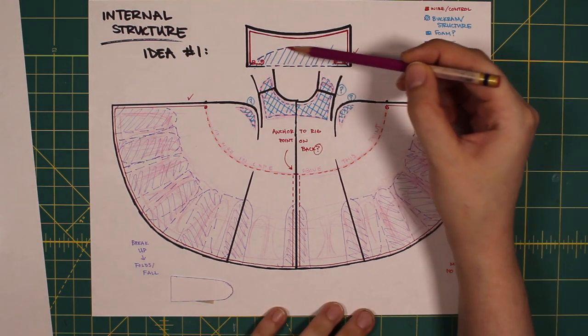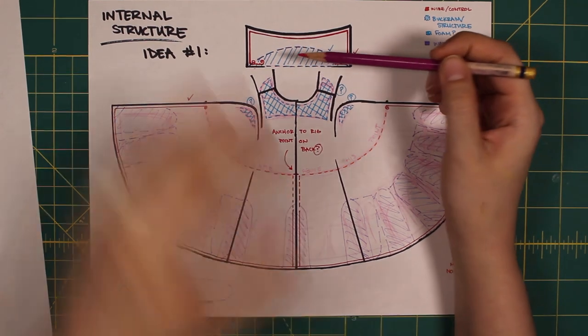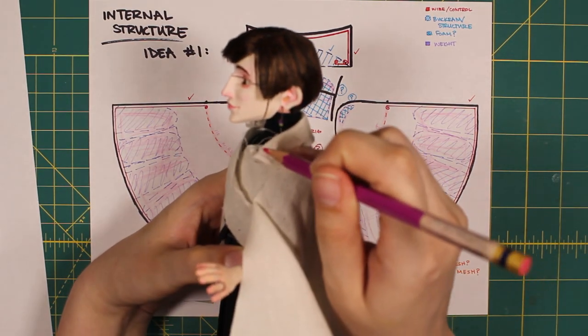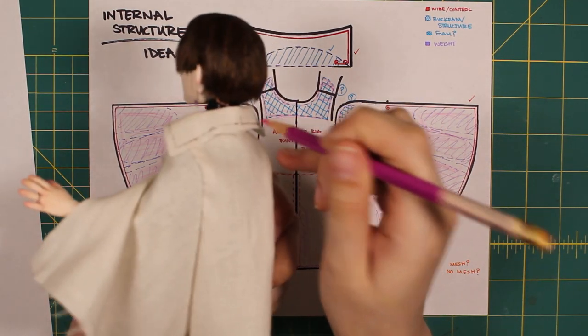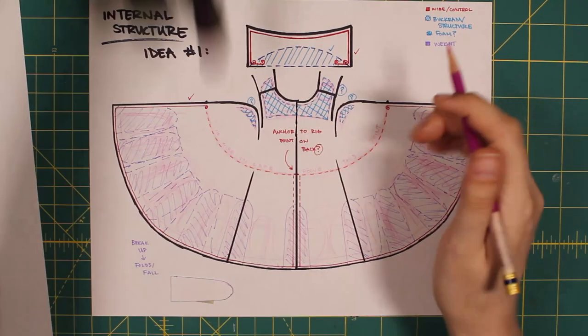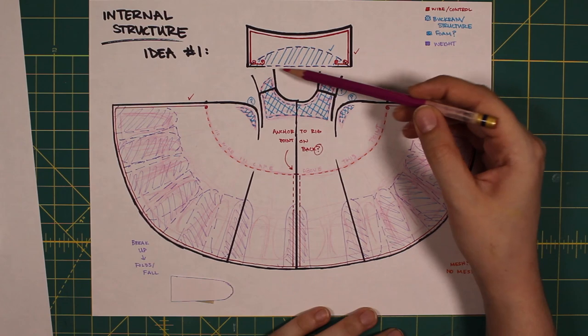The main challenge that I believe capes present in stop motion is how best to control their motion in each frame, which brings the focus to the internal structures which are meant to do just that. There is no one-size-fits-all solution for this problem, so it's important to consider the context of the cape.